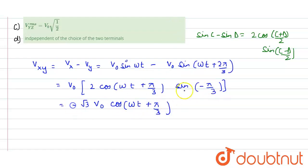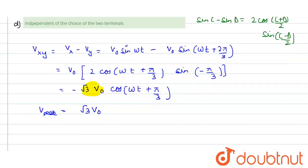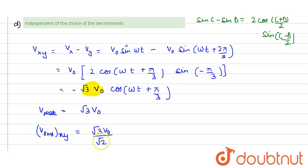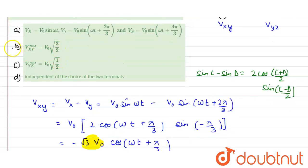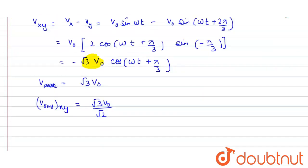So the peak value of Vxy is √3·V₀. Therefore, the RMS value of Vxy = V_peak / √2 = √3·V₀ / √2, which equals V₀√3/√2. This confirms that the option V₀√(3/2) for xy is correct. Now similarly, we calculate for Vyz.